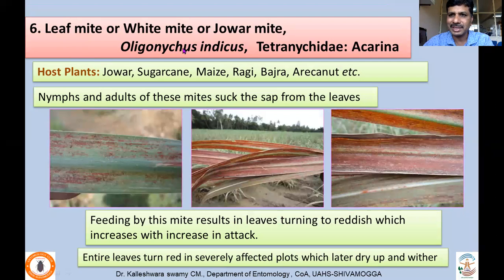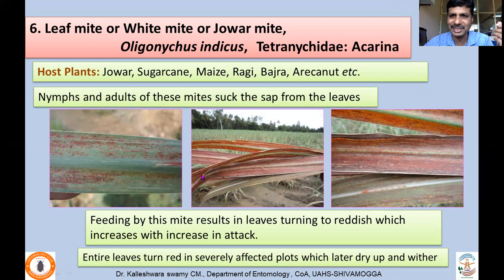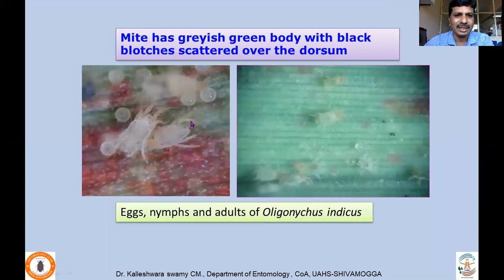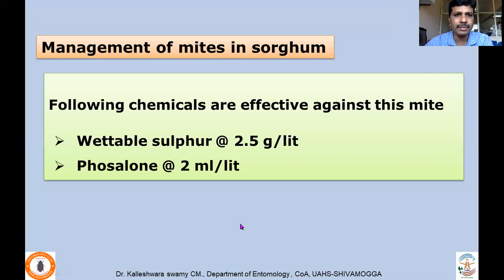The leaf mite or zover mite, Oligonychus indicus, also called white mite, has a wide range of hosts including sorghum, sugarcane, maize, ragi, bajra, and Arjun tree. Both nymphs and adults suck juice, resulting in reddish appearance of leaves. Feeding causes leaves to turn reddish, intensifying with increasing attack until entire leaves turn red and later dry. To manage Oligonychus indicus on sorghum, spray acaricides like wettable sulfur at 2.5 g per liter or phosalone at 2 ml per liter.